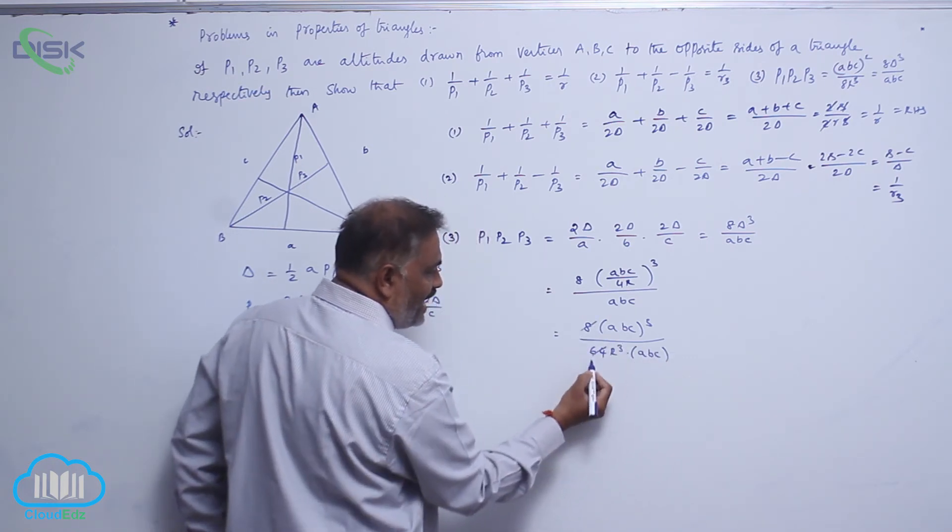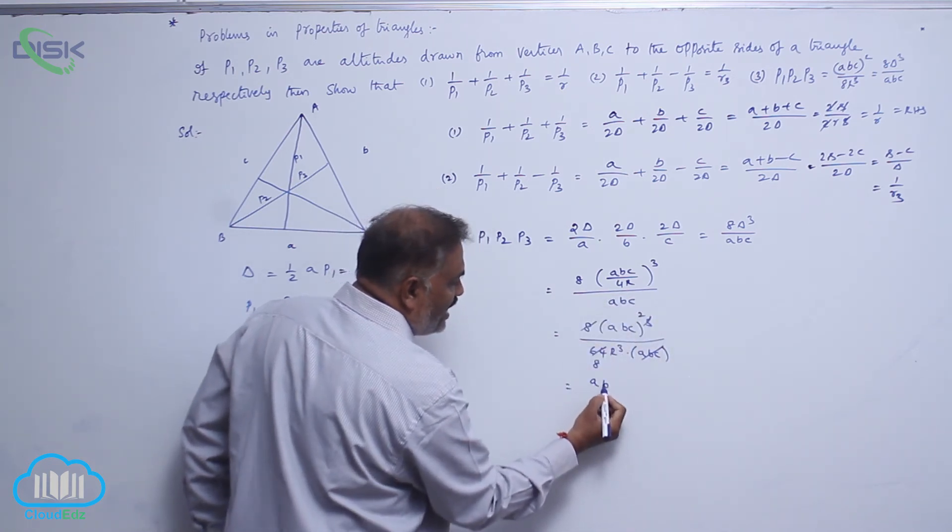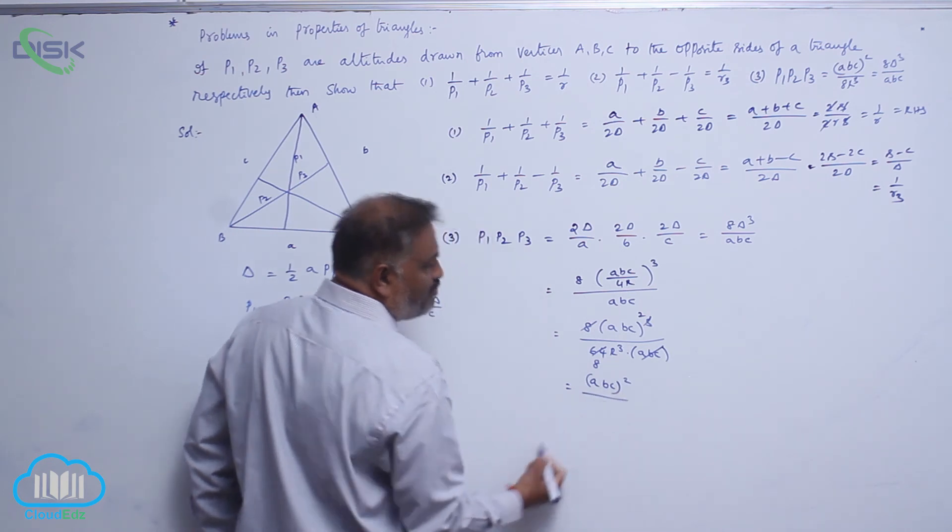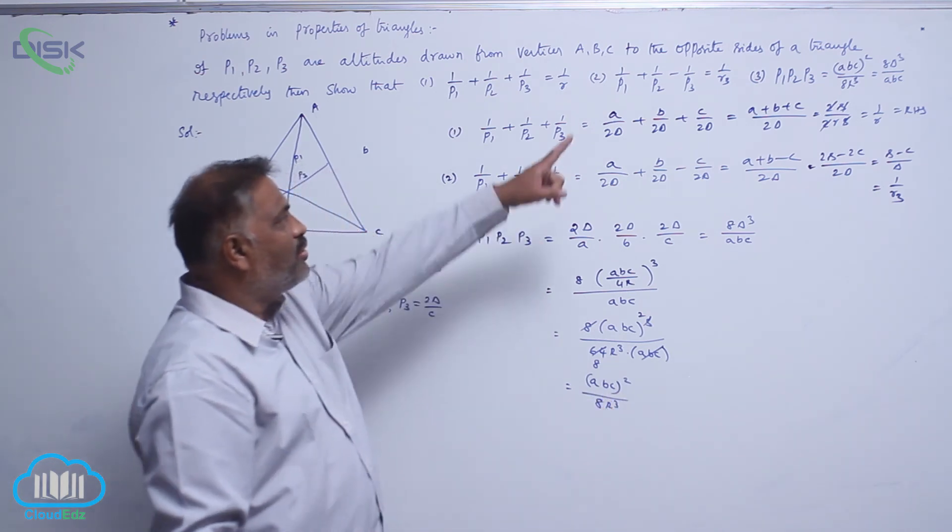This is 8 times, 1, 2 times left over. It is ABC whole square divided by 8 R cube. So we proved all the results.